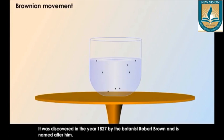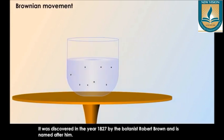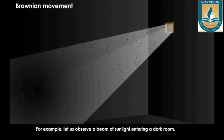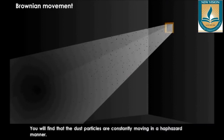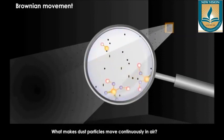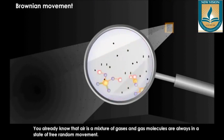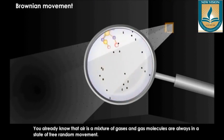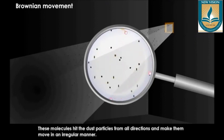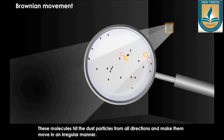The continuous zigzag motion of the particles suspended in a gas or a liquid is called Brownian movement. It was discovered in 1827 by the botanist Robert Brown and is named after him. For example, let us observe a beam of sunlight entering a dark room. You will find that the dust particles are constantly moving in a haphazard manner. Air is a mixture of gases, and gas molecules are always in a state of random movement. The same is the case with molecules of cytoplasm.